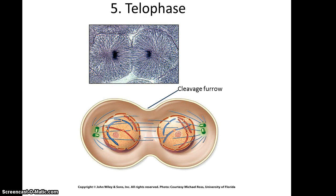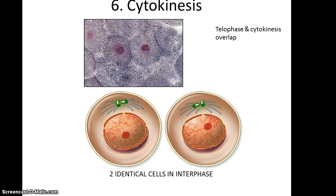When you get to telophase, the chromosomes have reached the opposite sides of the cell. The nuclear envelope begins to reform, the mitotic spindles start to break down, and the chromosomes relax into chromatid state. A cleavage furrow forms between the two sides of the cell and eventually reaches all the way through, giving two separate cells now in interphase. It's worth pointing out that cytokinesis and telophase overlap and are often thought of as the same phase.